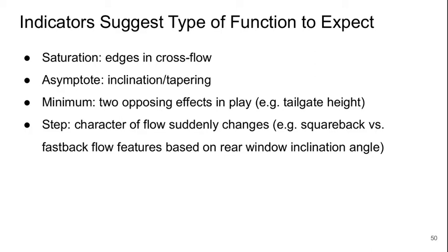We have some indicators to suggest the type of function to expect. We expect the saturation type when we have edges and cross flow. We expect the asymptote type when we have inclination or tapering. We expect a minimum when there are two opposing effects in play — for example, the tailgate height. And we expect the step when the character of the flow suddenly changes — for example, going from a square back versus a fastback, based on the rear window inclination angle.